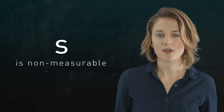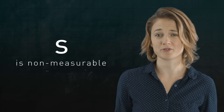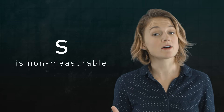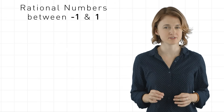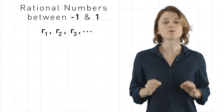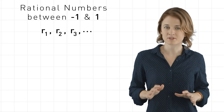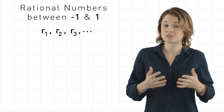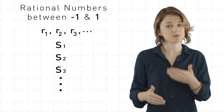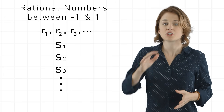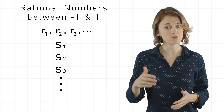The proof that S is non-measurable is a little tricky, so I'd encourage you to pause and re-watch whenever it's helpful. First, we'll list all the rational numbers between negative 1 and 1: R1, R2, R3, and so on. Remember, there's countably many rational numbers, so it's no problem to make a list like this. Then we'll define a bunch of new sets S1, S2, S3, and so on, which are essentially just copies of S shifted by the rational numbers R1, R2, R3.